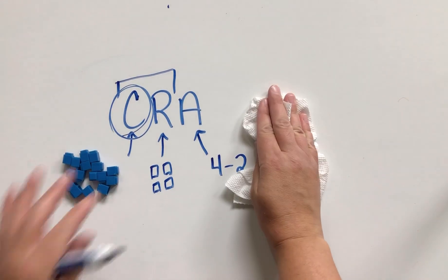So let's talk about how we can use the CRA model to reinforce counting back and counting up as a strategy.